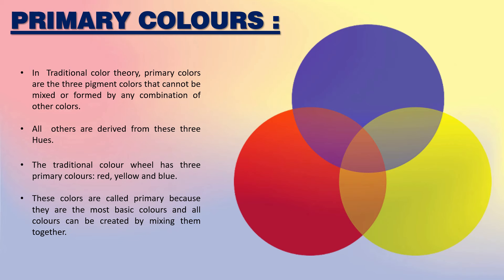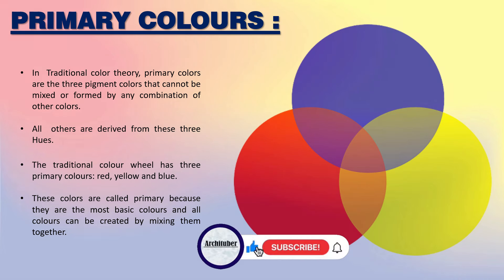Basically there are three main color schemes: primary colors, secondary colors and tertiary colors. Starting with primary colors — there are three pigments and these three colors can be mixed to form any color combination. They are red, yellow and blue, and all other colors are derived from these three hues.